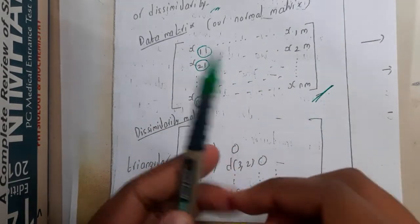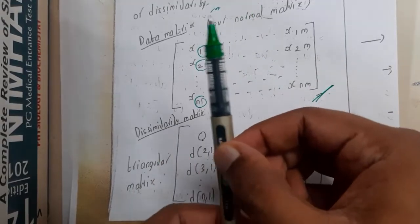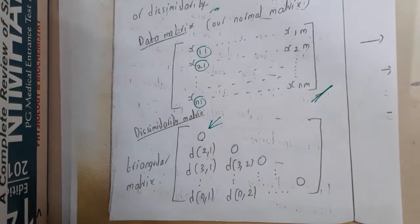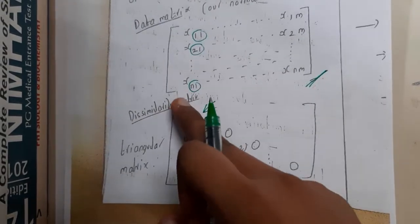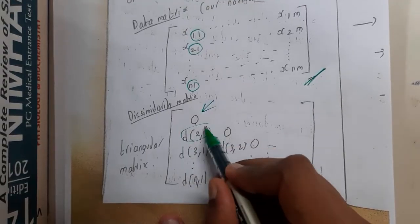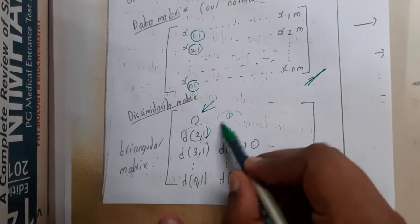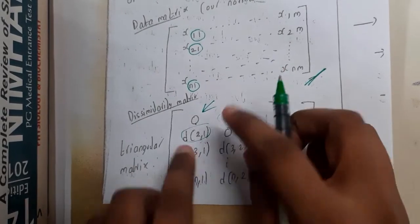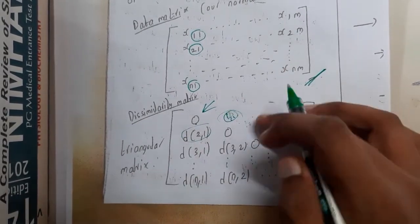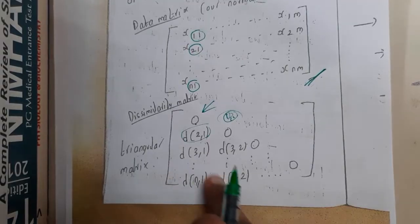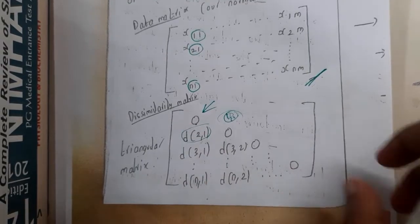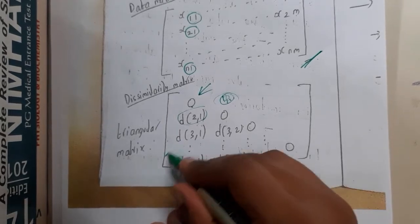There is a small catch: dissimilarity of an item with itself will always be zero, because they are 100% similar. Checking this pen with the same pen — there are no differences — so the dissimilarity value is zero. That is why the diagonal of the dissimilarity matrix will always be zero. Also, dissimilarity of two with one equals dissimilarity of one with two, so we only need to write the lower or upper triangle.